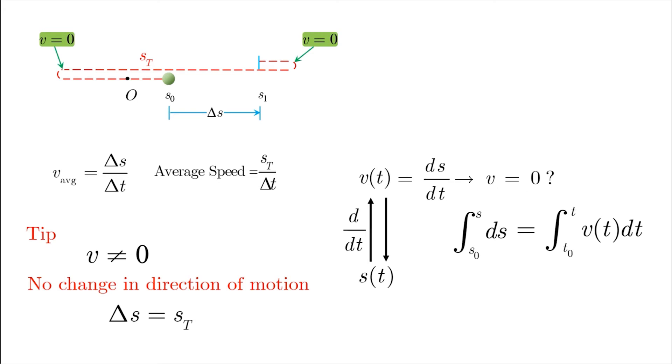Note that in this case, the initial conditions are found directly from substituting t equals to zero in s of t to find s_0.